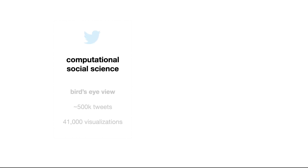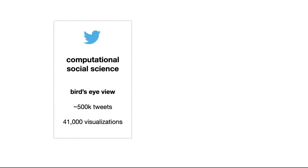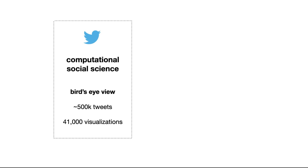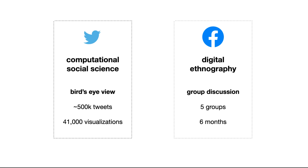To start answering this question, we combined tools in computational social science and digital ethnography to get a sense for how information circulates. First, we took a bird's eye view by studying half a million tweets and 41,000 visualizations computationally. We then combined that with digital ethnography so that we could identify the phenomena in a more granular fashion.